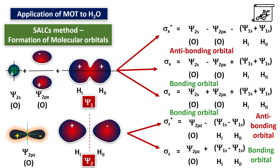One more atomic orbital of the central oxygen atom remains, that is ψ₂py. As there is no suitable orbital to overlap with ψ₂py, it remains non-bonding.